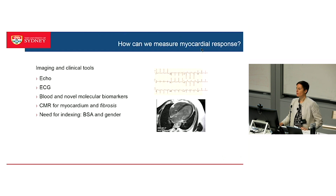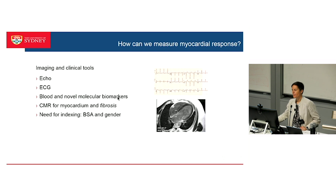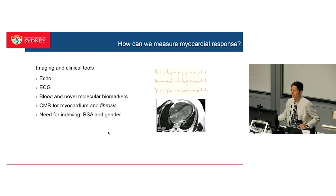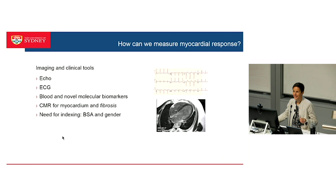So how can we measure myocardial response? Obviously we've got our classic imaging tools that we use every day — ECG, clinical judgement, ECHO. I think there's opportunity for improved biomarkers; we really don't have very many from the blood perspective at the moment. Obviously we do use BNP and troponin. Cardiac MR is increasingly telling us what's actually happening, not quite at the cellular level, but certainly in the interstitium a little bit more.